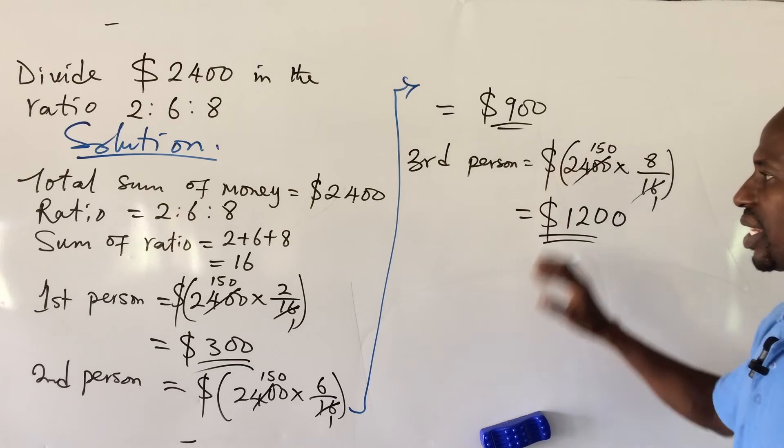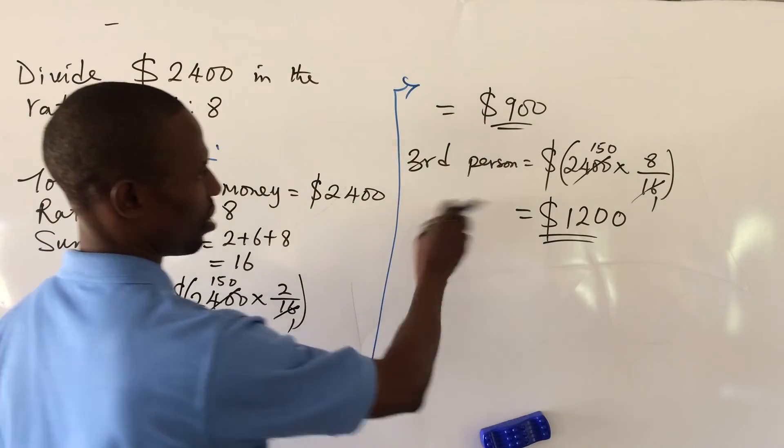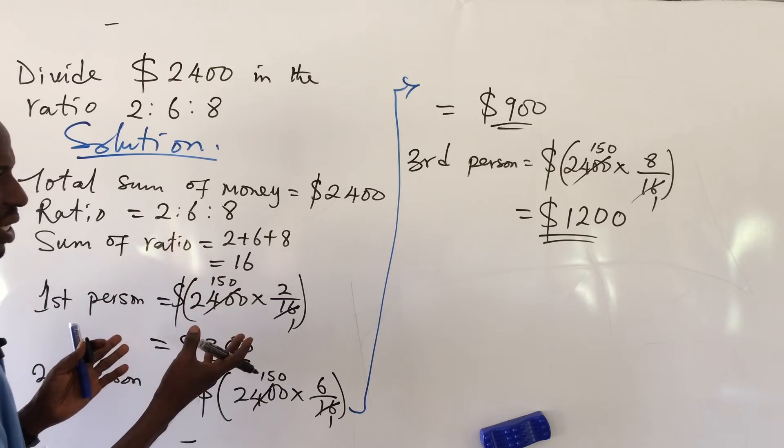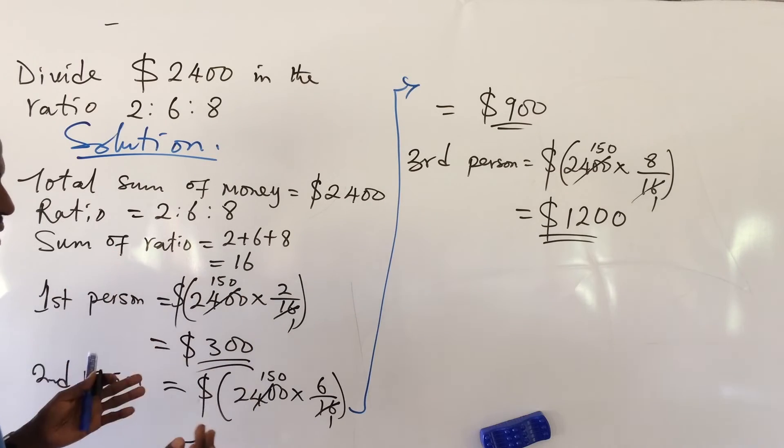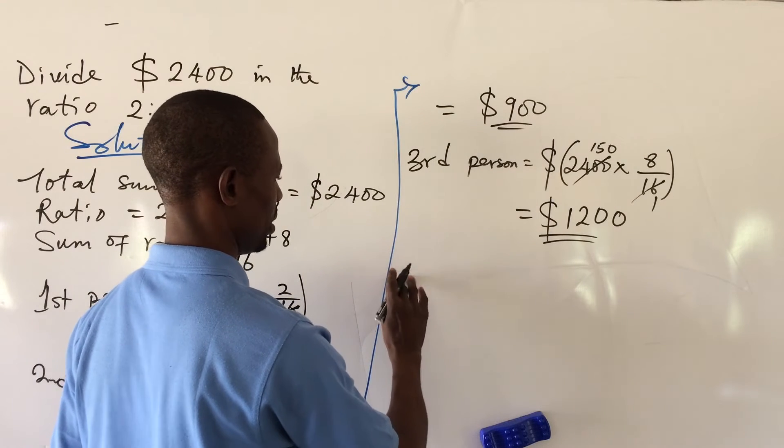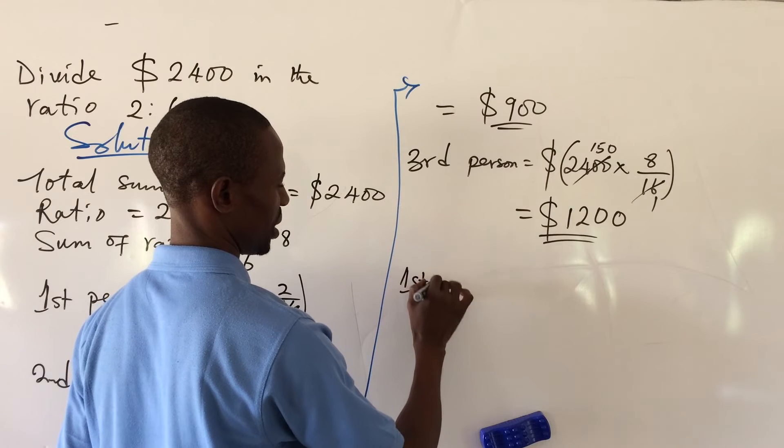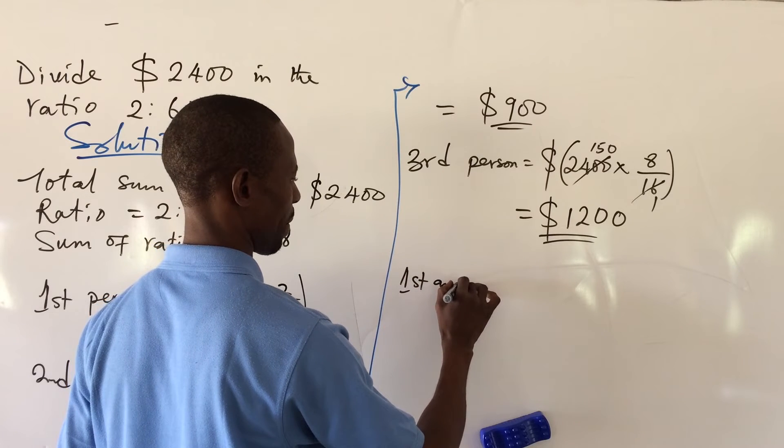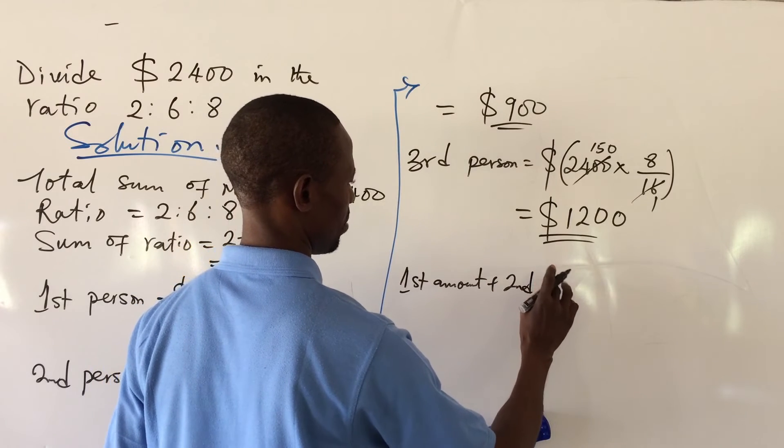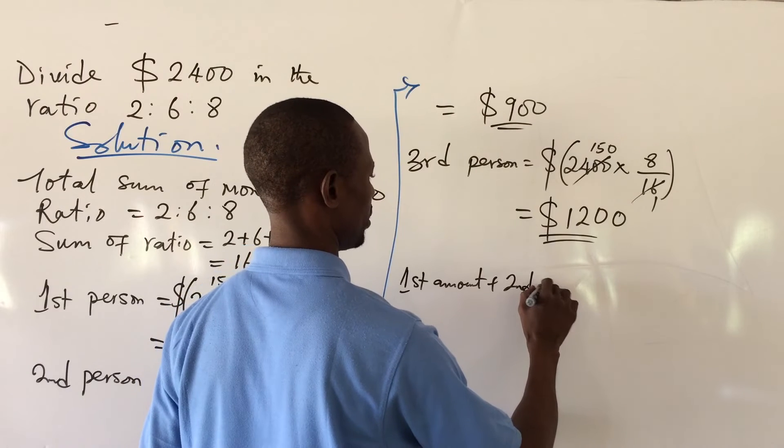All right, let's confirm if the summation of this will give us 2400. So let's sum all the amounts together: amount for the first person, amount for the second person, and amount for the third person. So we have first person amount plus second person amount plus third person amount.